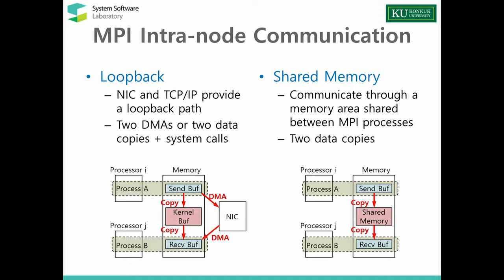In the case of Ethernet, TCP/IP copies the data from the source buffer to the TCP/IP internal buffer, and if the destination process is on the same node, it copies from the kernel buffer to the receive buffer — so there are two data copies and system calls. To reduce these overheads induced by loopback, a shared memory-based scheme has been suggested, where MPI processes running on the same node communicate through user-level shared memory. This removes the need for DMAs and system calls, however we still have two data copies.